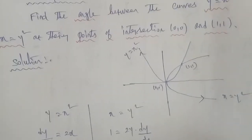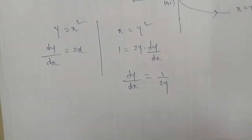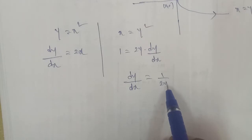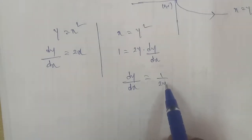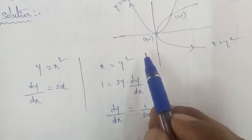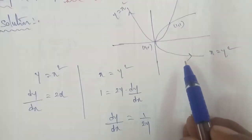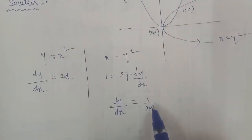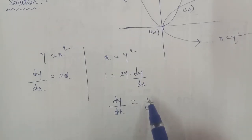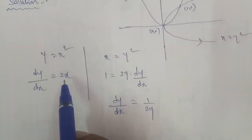At the point of intersection (0,0), applying to dy by dx equals 1 by 2y: substitute y equals 0, we get 1 by 2 into 0, which is 1 by 0 — that is undefined. So at (0,0), m2 is undefined.